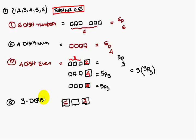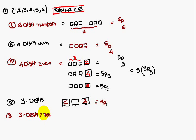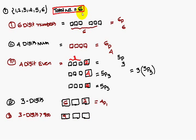Next: three-digit numbers starting with 6 and ending with 2. One blank remains; eligible numbers are six minus two, that is four — so 4P1 ways. Next: three-digit numbers greater than 900, meaning starting with 9 — but wait, using digits from {1,2,3,4,5,6}, we have two blanks and five eligible numbers, so 5P2 is the answer.